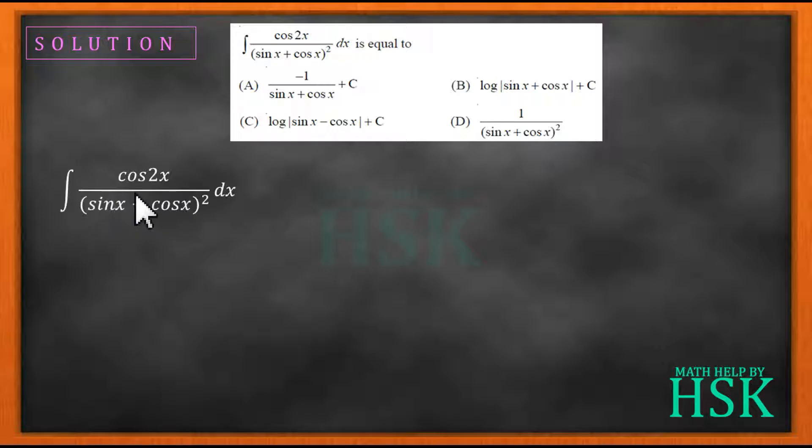Let us see how we are going to solve this question. The given integral is cos 2x upon sine x plus cos x whole square dx.